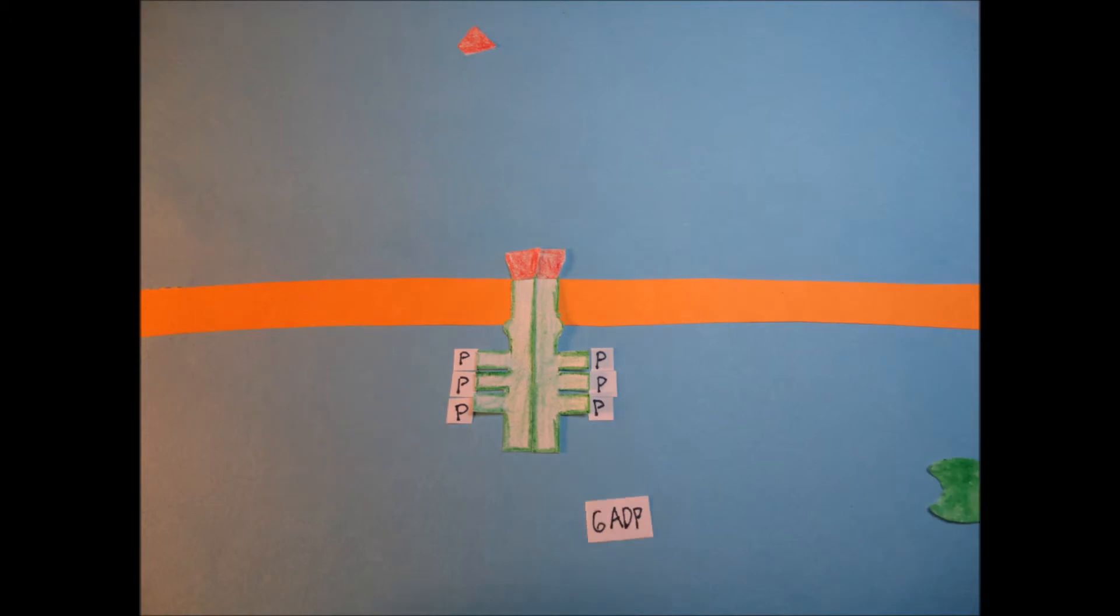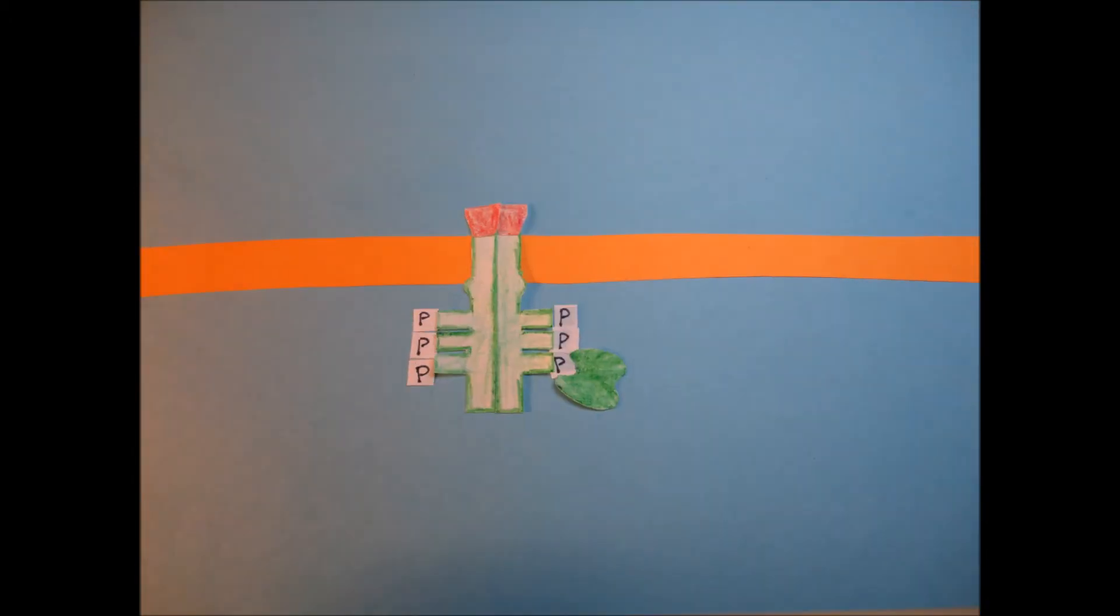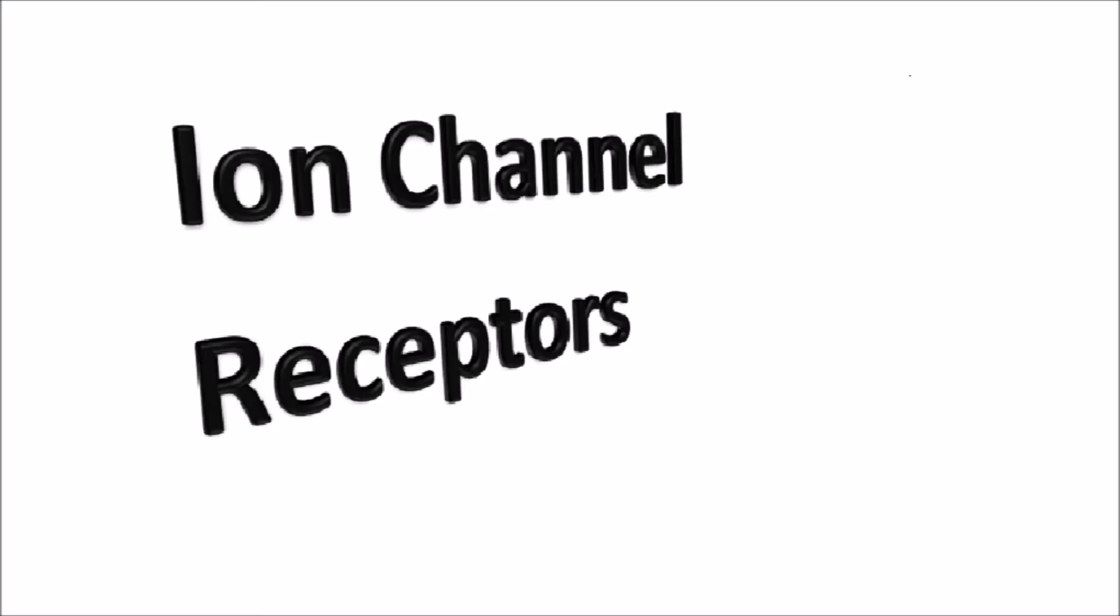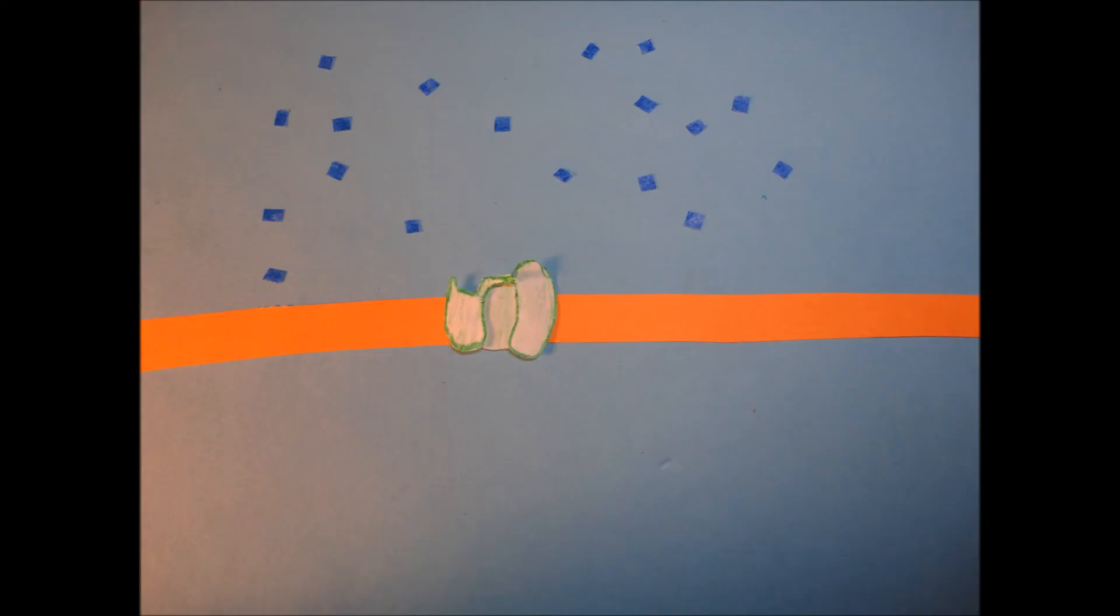Specific relay proteins can then bind to a specific phosphorylated tyrosine. When a protein binds, the protein changes shape and triggers a pathway leading to a cellular response. Ligand-gated ion channels open and close to allow specific ions through the membrane.